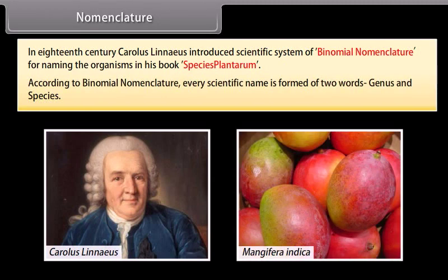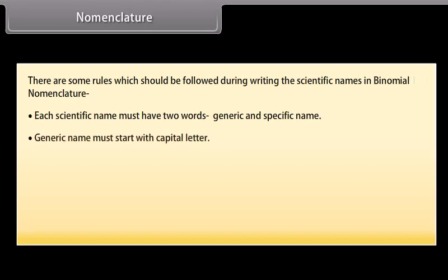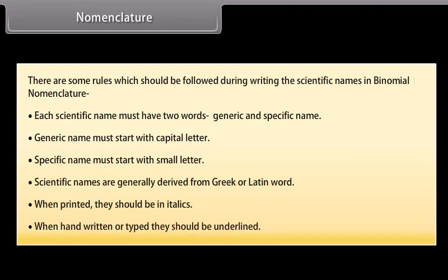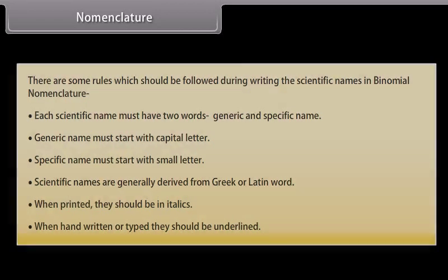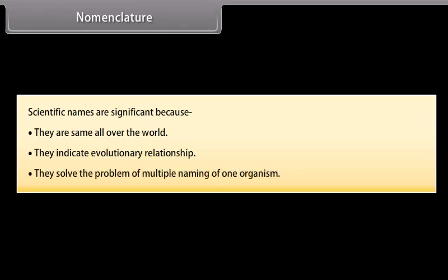According to binomial nomenclature, every scientific name is formed of two words: genus and species. Rules: each scientific name must have two words — a generic name starting with a capital letter and a specific name starting with a small letter. Scientific names are generally derived from Greek or Latin words. When printed, they should be in italics; when handwritten or typed, they should be underlined. Scientific names are significant because they are the same all over the world, they indicate evolutionary relationships, and they solve the problem of multiple naming of one organism.